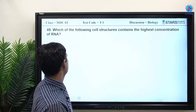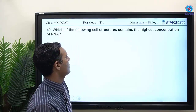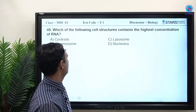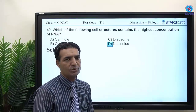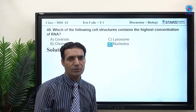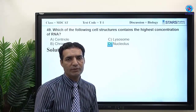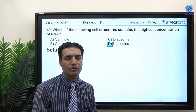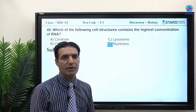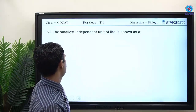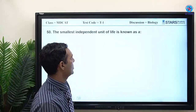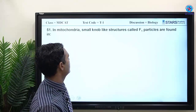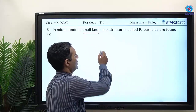MCQ: which cell structure contains the highest concentration of RNA? Ribosomal RNA is found in the nucleus. The smallest independent unit of life is known as the cell.